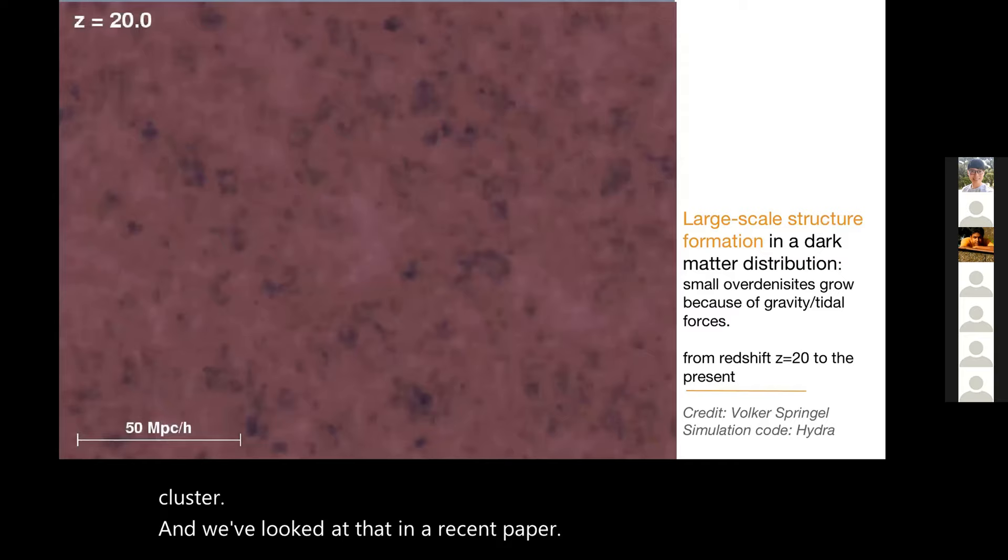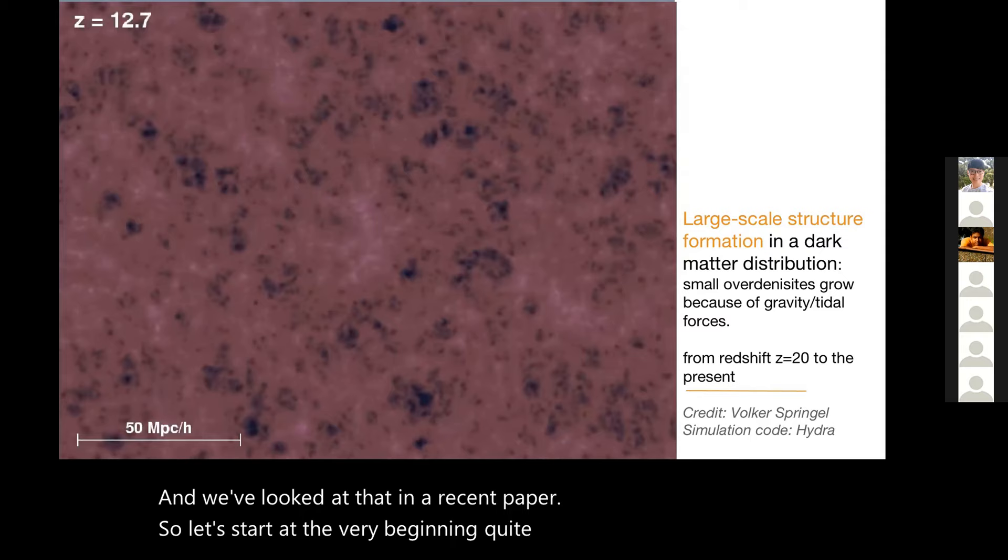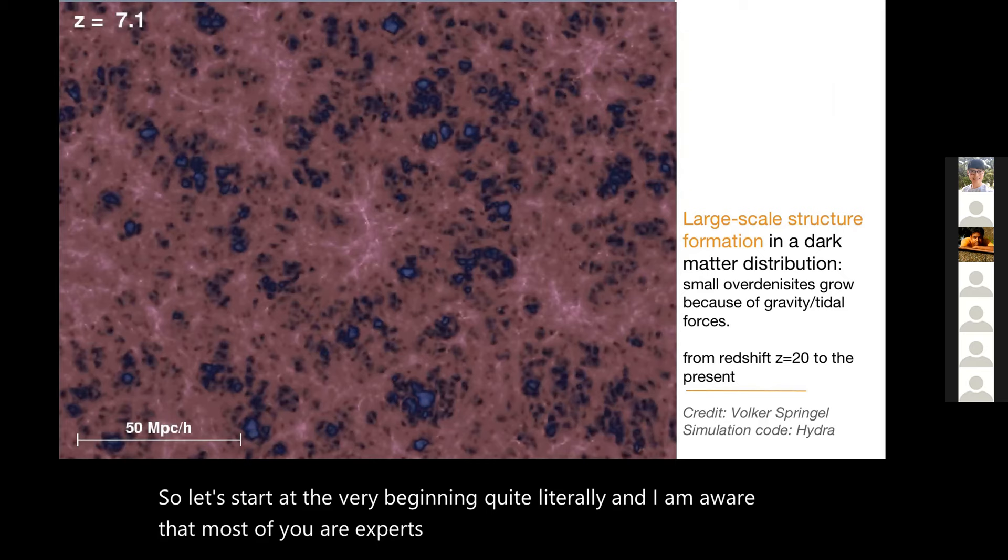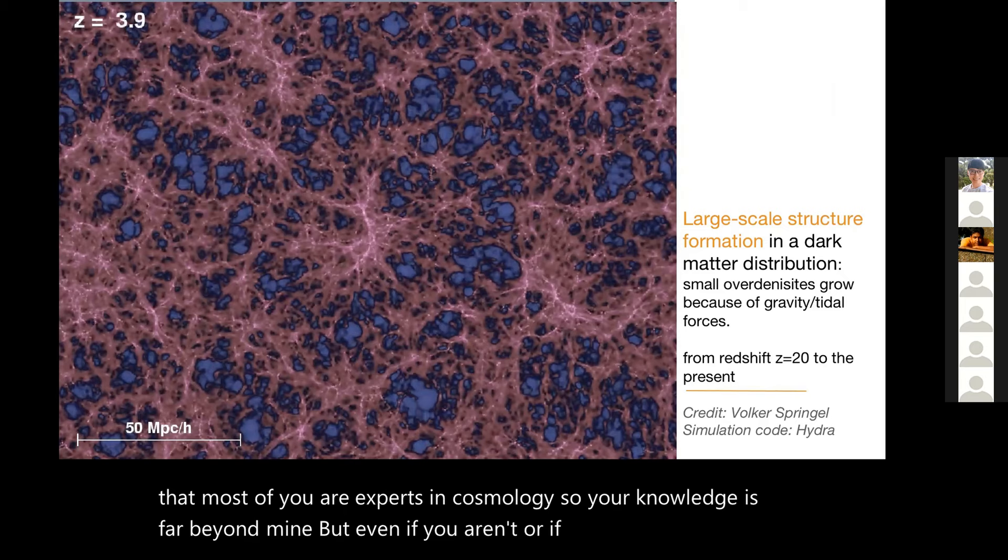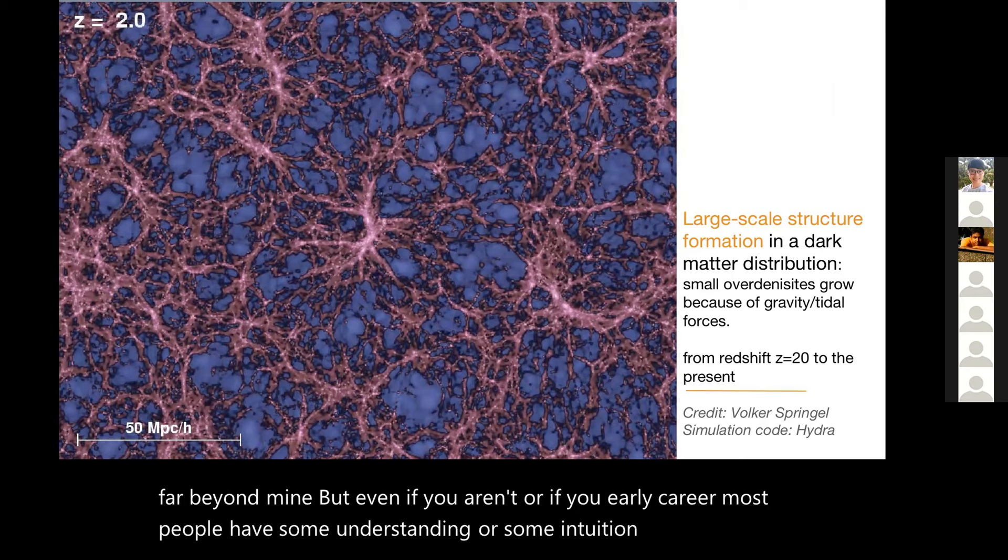Galaxy cluster outskirts are complex because of the velocity fields. We can study that in simulation, following the diffuse material and how they move and collapse towards the filaments and towards the cluster. We've looked at that in a recent paper. So let's start at the very beginning, quite literally. I am aware that most of you are experts in cosmology, but even if you aren't or if you're early career, most people have some understanding or intuition of how today's large scale structure came to be.